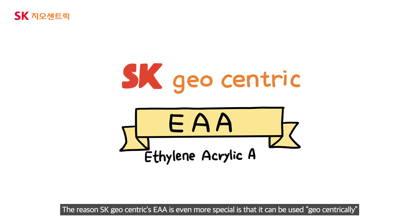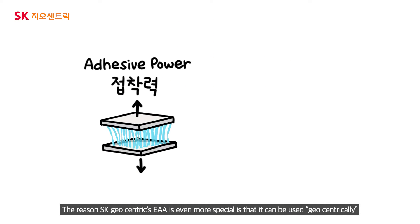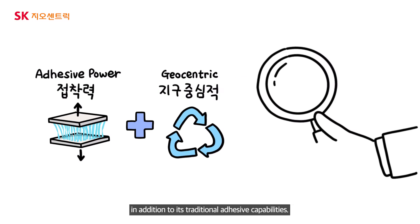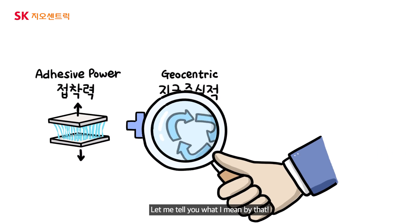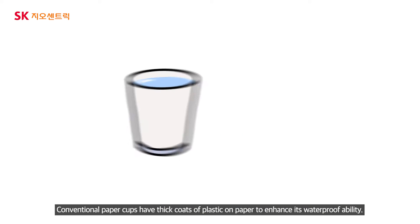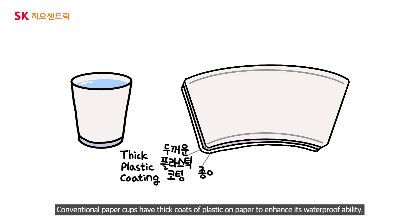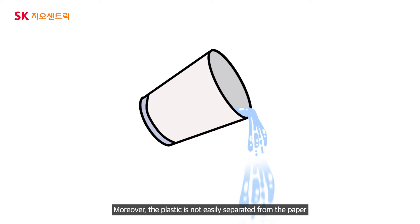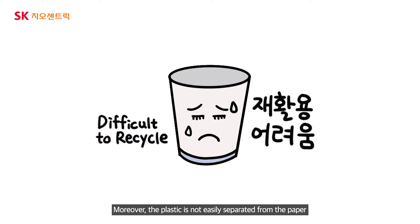The reason SK Geocentric's EAA is even more special is that it can be used in an eco-friendly way, in addition to its traditional adhesive capabilities. Conventional paper cups have thick coats of plastic on paper to enhance waterproof ability. This is not ideal since a large amount of plastic is used to coat the paper cups. Moreover, the plastic is not easily separated from the paper, which drastically reduces recycling efficiency.